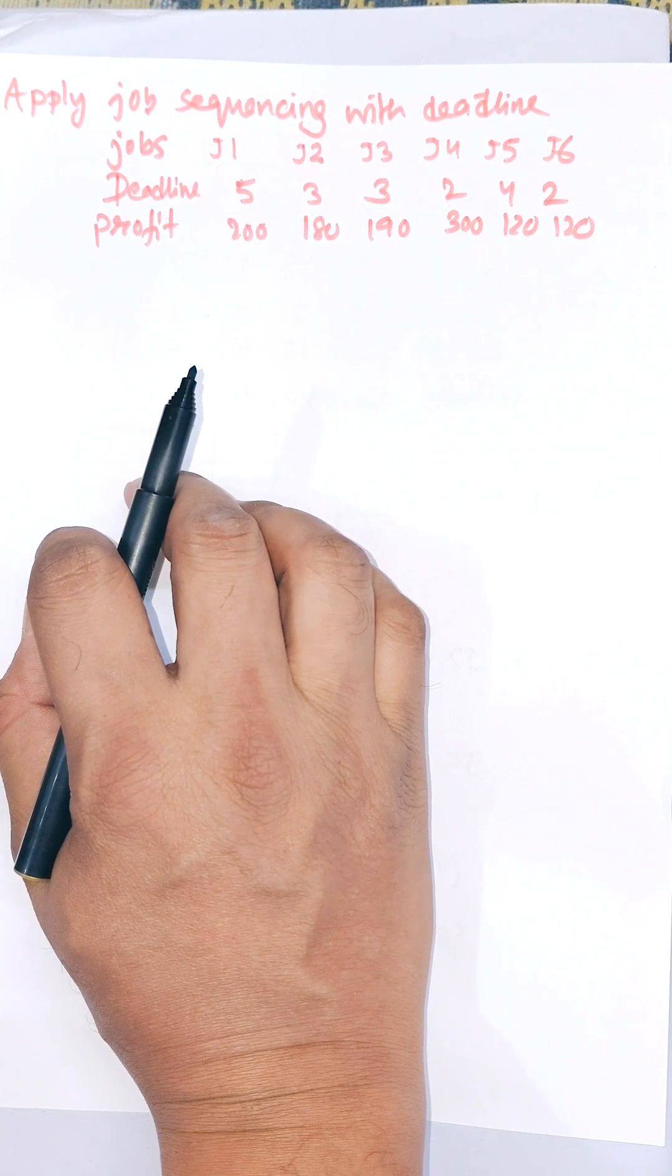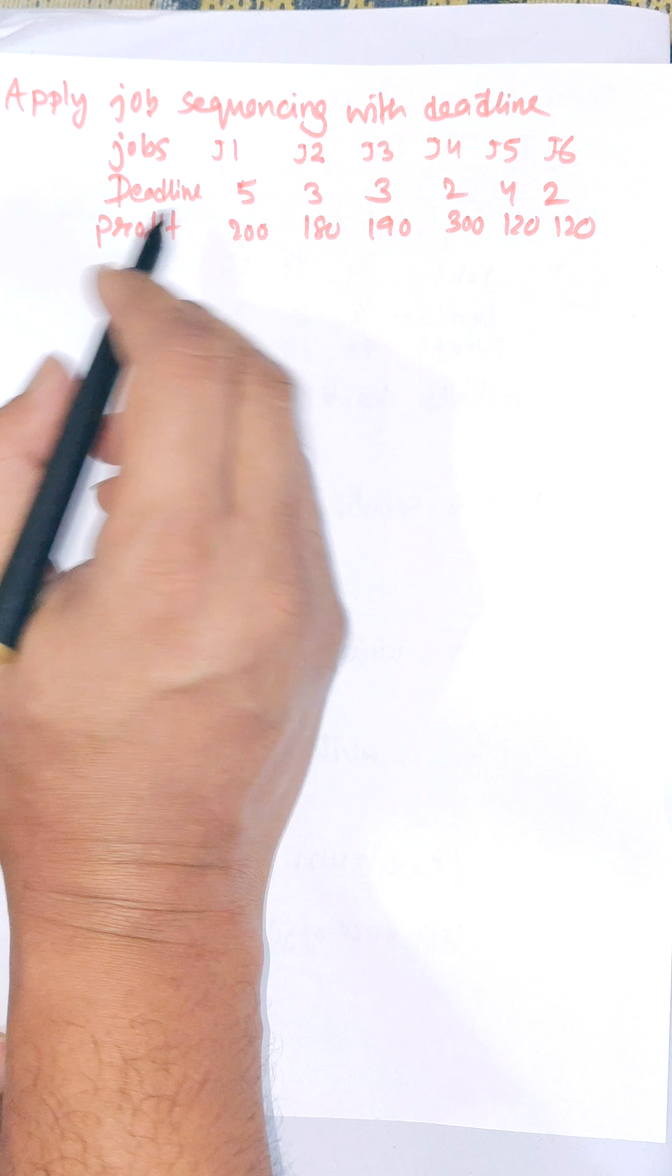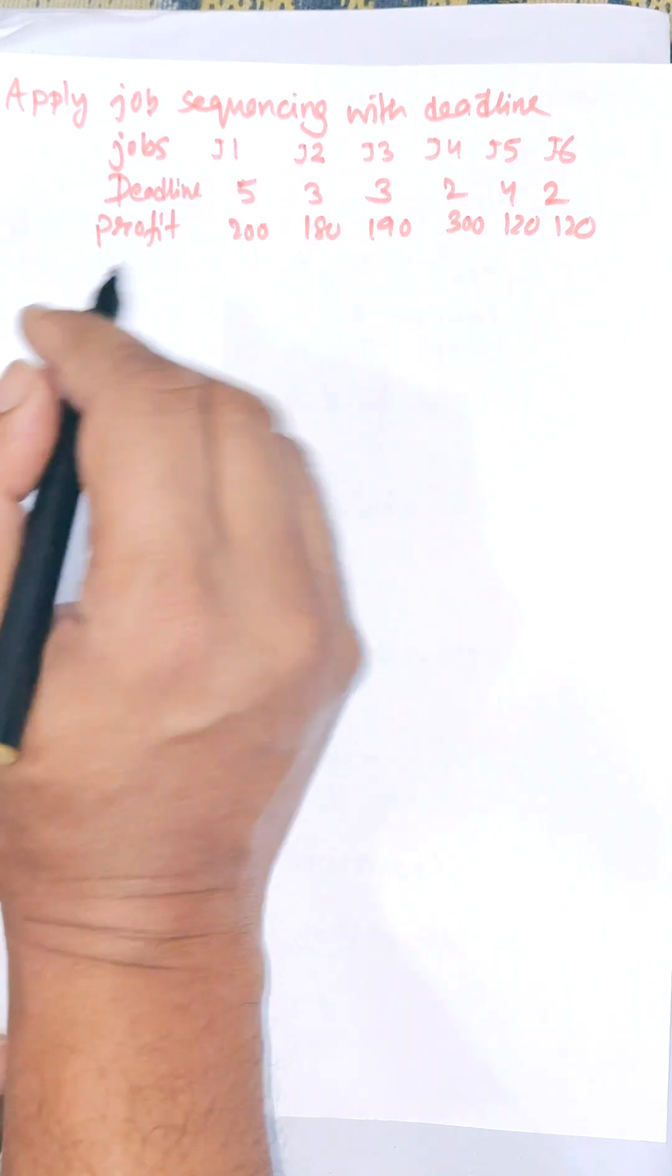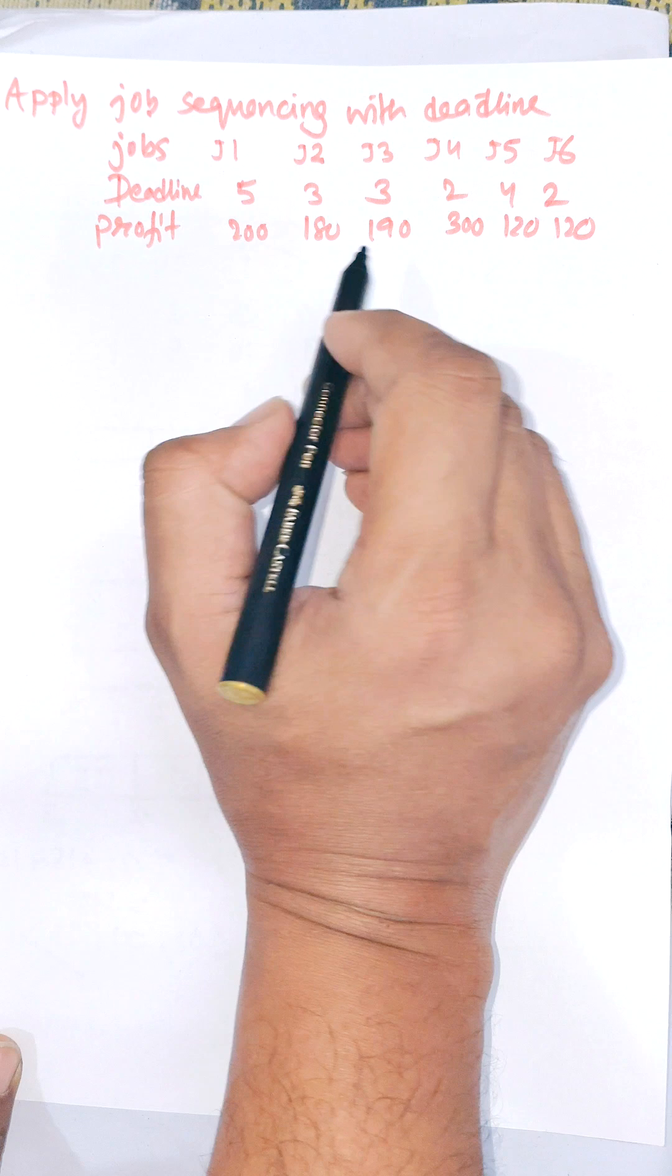Hi everybody, in this video I am going to apply job sequencing with deadline and we need to find maximum profit for the given problem. Here it is a greedy method. First of all we need to select a maximum profitable job.